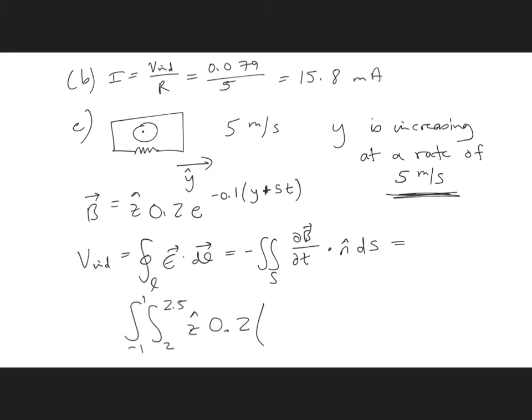then we're going to multiply by minus 0.1 times 5. So that gives us minus 0.5. And then we're left with e to the minus 0.1, y plus 5t. Now we have dot n hat, and we can define that for convenience to be in the direction of V. So we can say that is in the z direction, z hat direction. And then we just have dy dx.